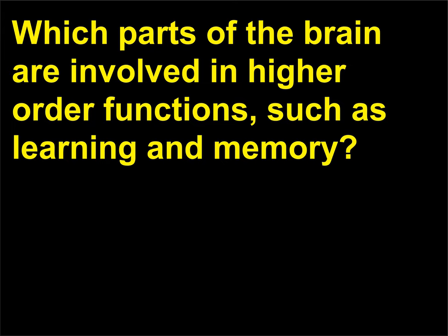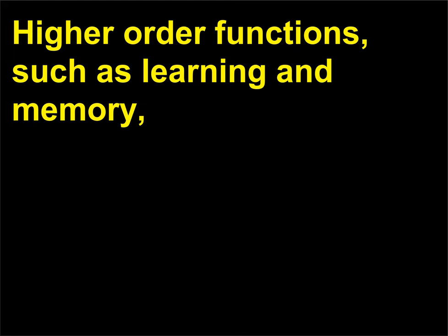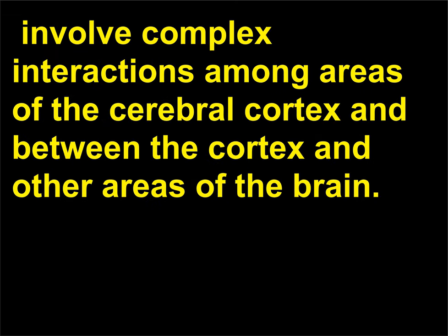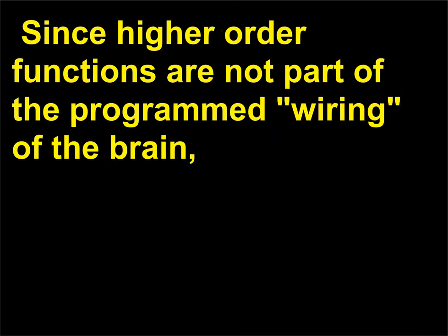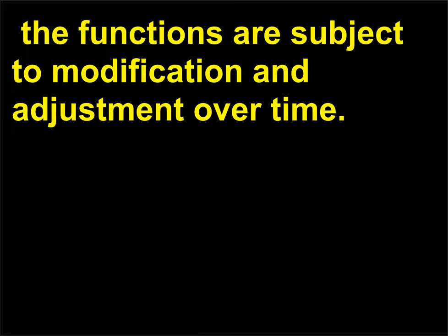Which parts of the brain are involved in higher-order functions such as learning and memory? These involve complex interactions among areas of the cerebral cortex and between the cortex and other areas of the brain. Information is processed both consciously and unconsciously. Since higher-order functions are not part of the programmed wiring of the brain, the functions are subject to modification and adjustment over time.